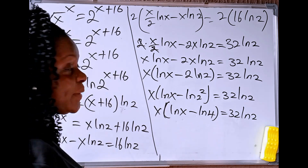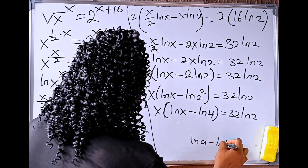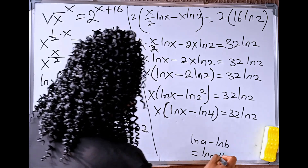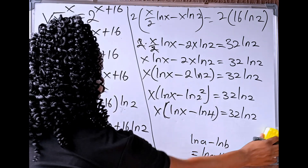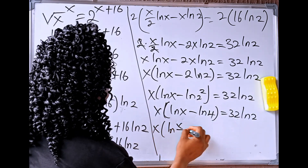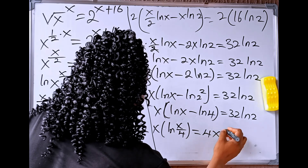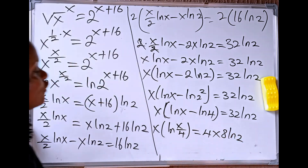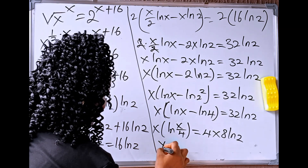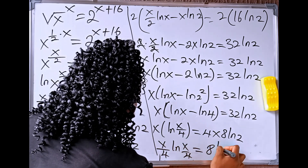From here, we apply the rule that ln of a minus ln of b equals ln of a divided by b. So we have x times ln of x divided by 4 equals 32 ln of 2. Now, 32 can be written as 4 times 8 ln of 2. So if we divide both sides by 4, we have x divided by 4 times ln of x divided by 4 equals 8 ln of 2.